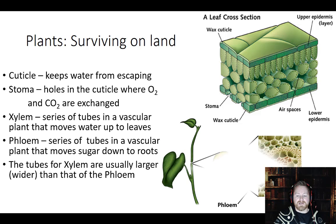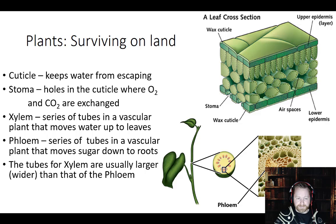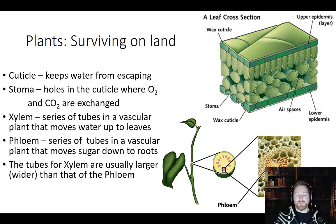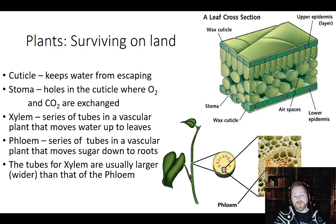The other thing plants needed is tubes to push water and sugar around the body — xylem and phloem. The way to remember: phloem and food have the same sound, so phloem carries food. And what is the food for plants? It's glucose — C6H12O6. Xylem is for water.